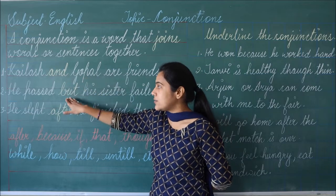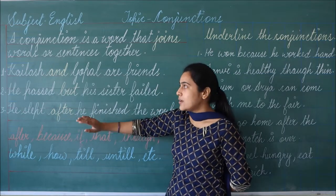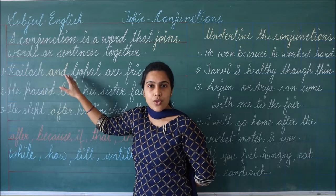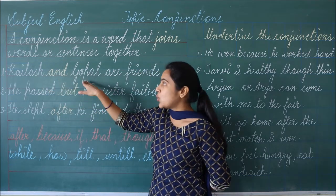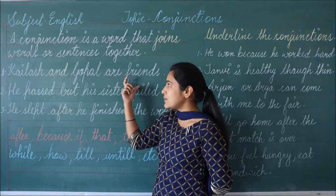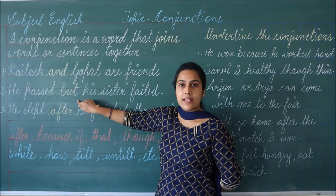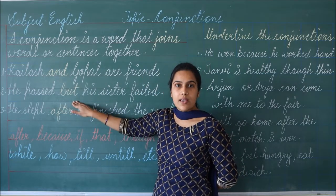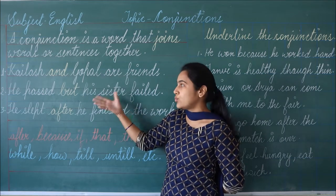Can you see the words that I have written with yellow chalk? क्या आप उन words को notice कर सकते हो जो मैंने yellow color chalk से write किये हैं? These words are used to join two sentences, two names, or two words together. Like the first one — Kailash और Gopal को 'and' word की help से join किया है, क्योंकि हम दोनों के बारे में एक ही बात बोलना चाहते हैं. Second sentence में 'but' की help से first और second sentence को join किया है, एक contrast show करने के लिए — दोनों sentences एक दूसरे के opposite हैं.